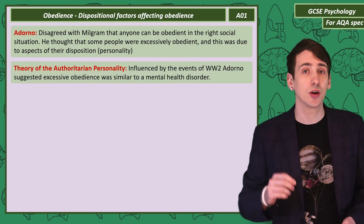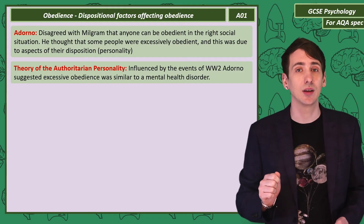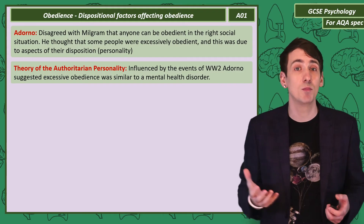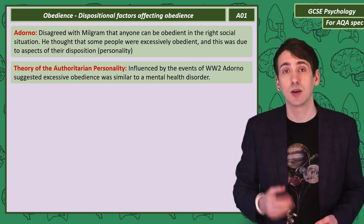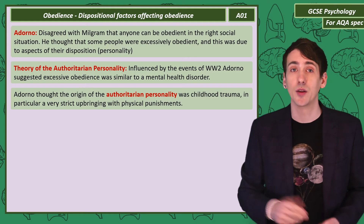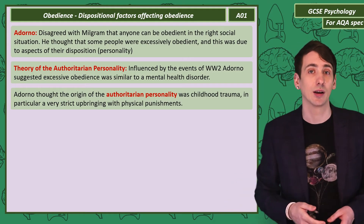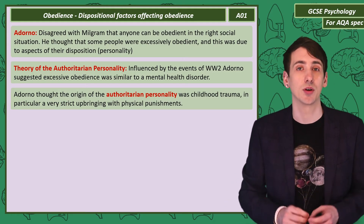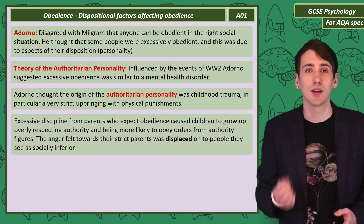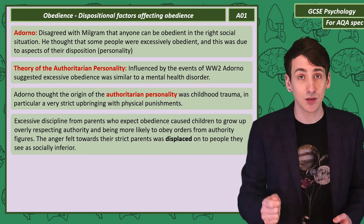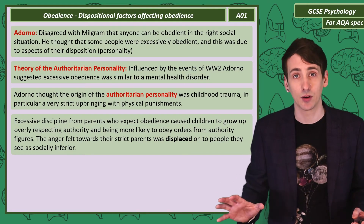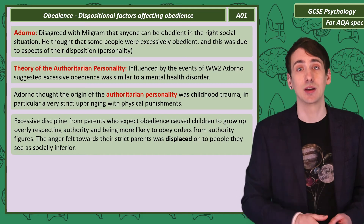According to Adorno's theory of the authoritarian personality, someone who is excessively obedient has a condition similar to a mental health disorder. An authoritarian personality starts from early childhood experience — trauma from a strict upbringing, likely with physical punishment. As we learn to respect authority through socialisation, this excessive discipline from parents leads to growing up with too much respect for authority and extreme obedience.